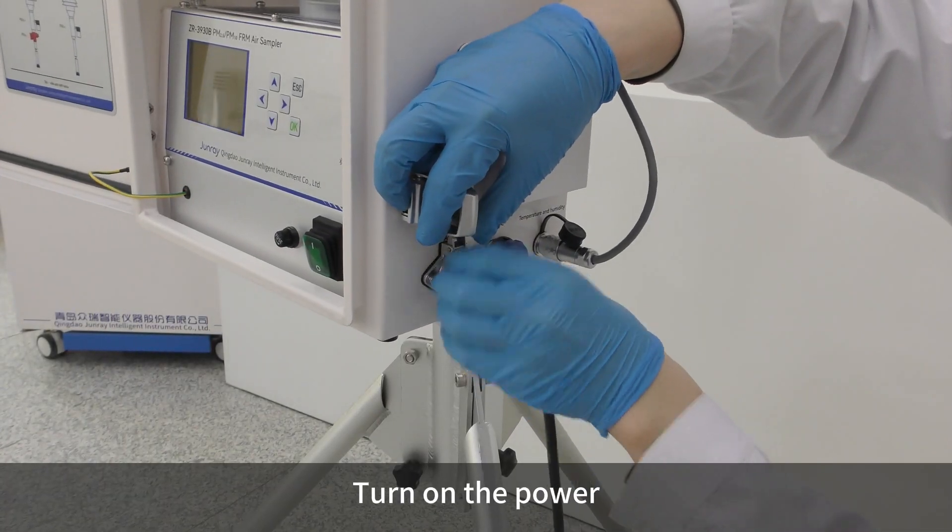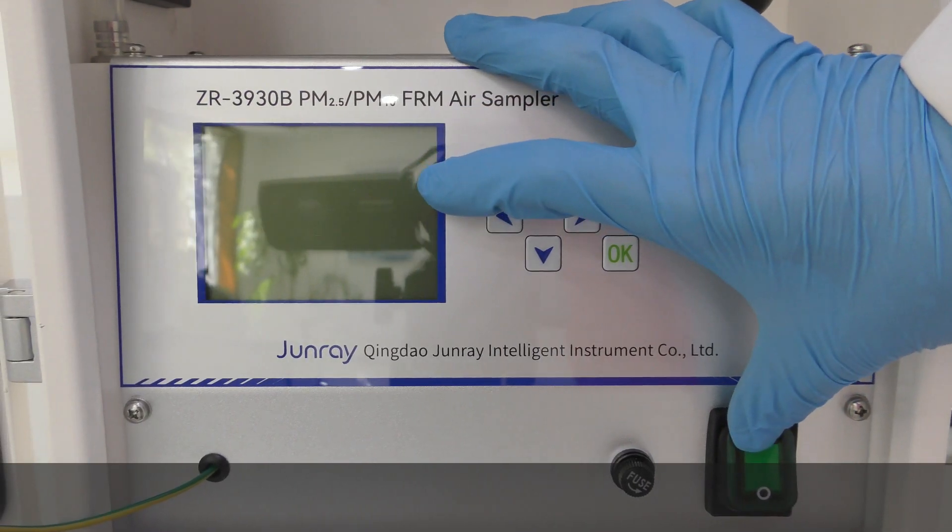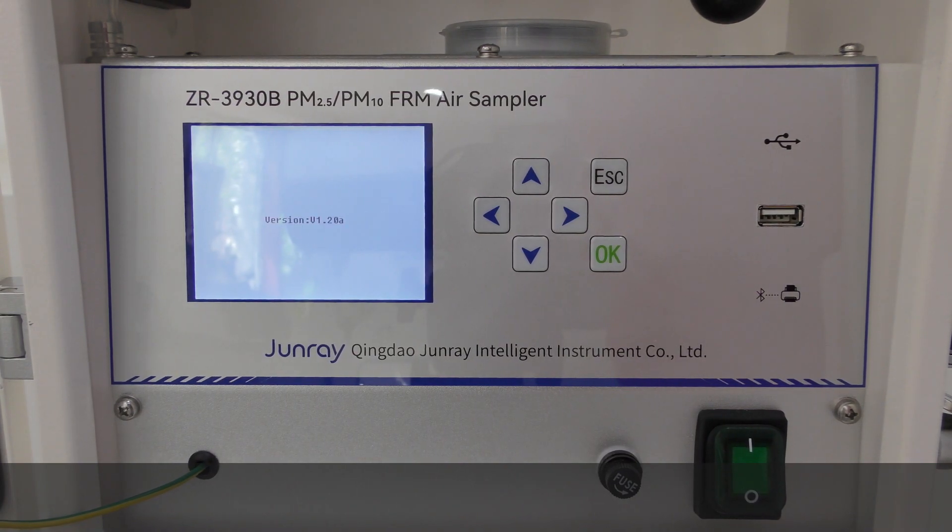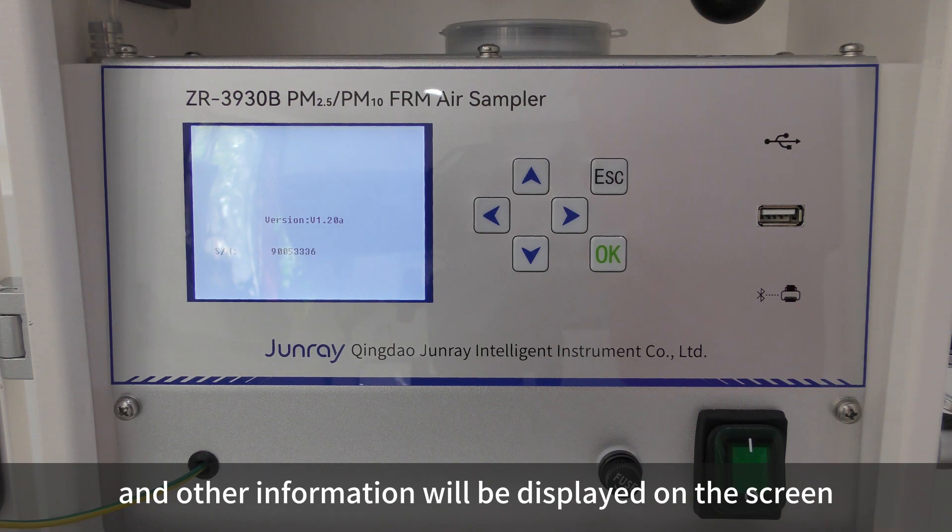Turn on the power and the version number, instrument number, and other information will be displayed on the screen.